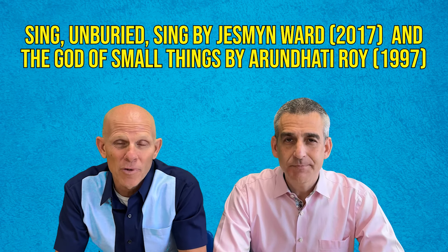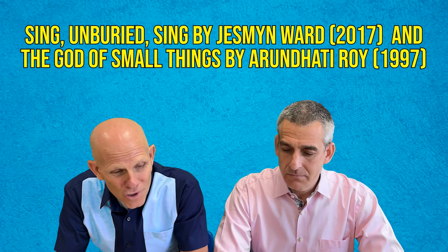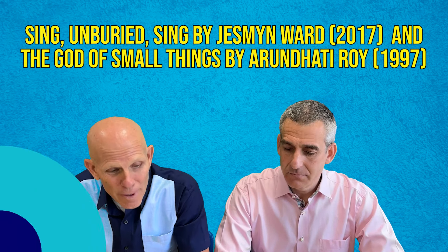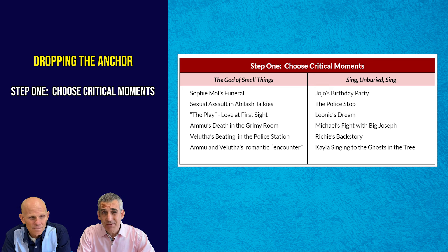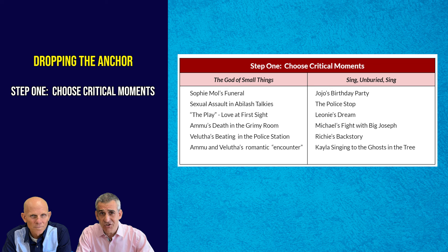We've chosen two literary works to give you some examples. The first step is to identify some hot spots — those moments in the novel that are critical. It could be the inciting incident, certain conflicts, the climax, or the resolution. We believe that regardless of which question you get, you're probably going to be writing about the same four, five, maybe six hot spots. So we want to make sure we know those hot spots very well.